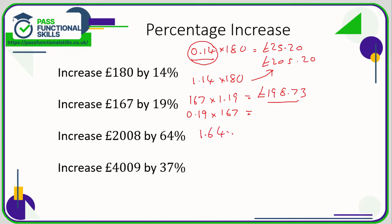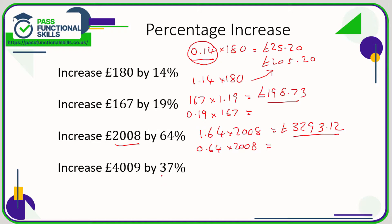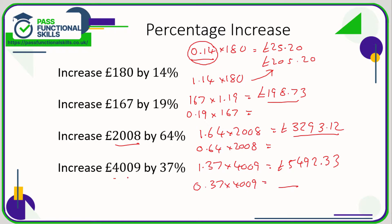The multiplier for 64% is 0.64, so for an increase it's going to be 1.64. So 1.64 multiplied by 2008 gives a total of 3293 pounds 12p. Alternatively, do 0.64 times 2008 and add it on to 2008. For 37%, the increase multiplier is 1.37. So 4009 multiplied by 1.37 comes to 5492 pounds 33.